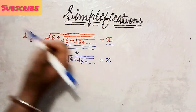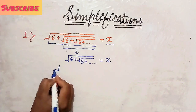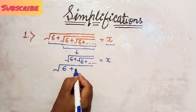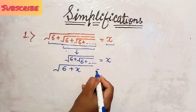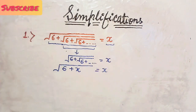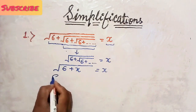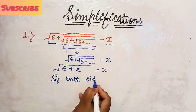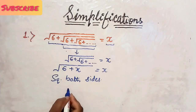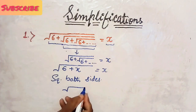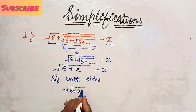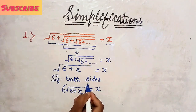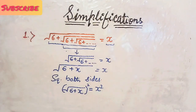So let us replace the value of the second part in the first one, and the first one will become the whole square root of 6 plus X equals to X. Now we have to remove the square root, so we square both sides. By squaring both sides, we get the square root of 6 plus X, whole square, equals X square.